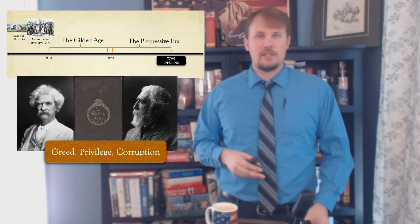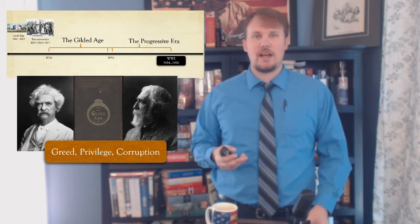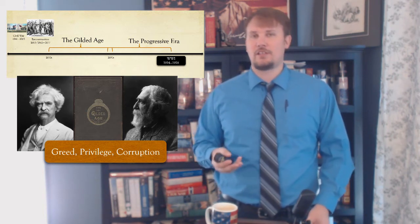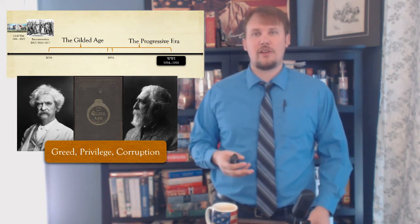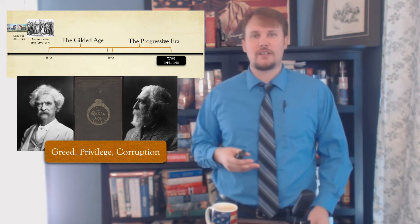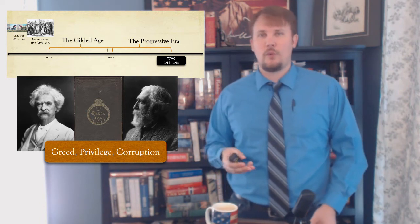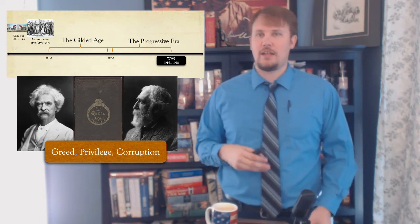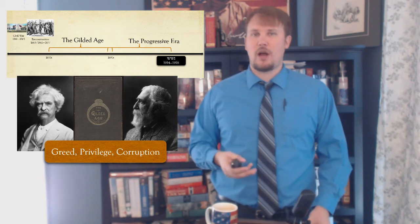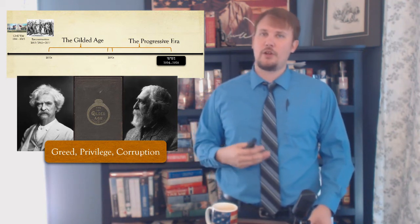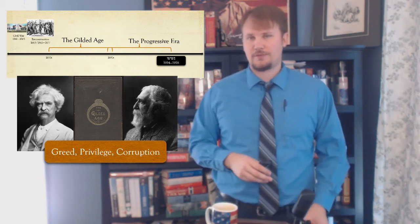Something that is gilded is covered with precious gold on the outside, but on the inside is something of lesser value. Looking from the outside, this period of American history is one of progress, improvement, and technology — rising overall wages and an increase in population. But underneath, many problems are festering, such as poverty, corruption, and undemocratic developments.